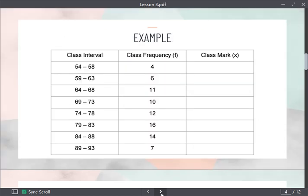Let's have an example. Consider this frequency distribution. We have the class intervals starting from 54 to 58, with an upper limit of 93. Each class interval has a width of 5, covering 54, 55, 56, 57, 58. We also have the class frequency and we will compute the class mark.